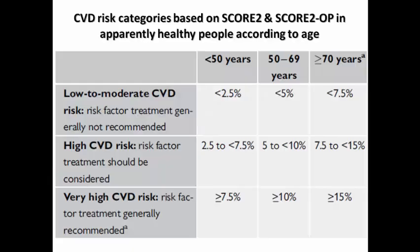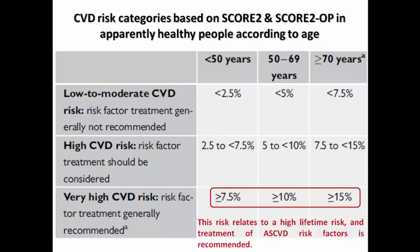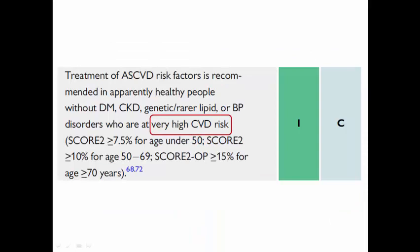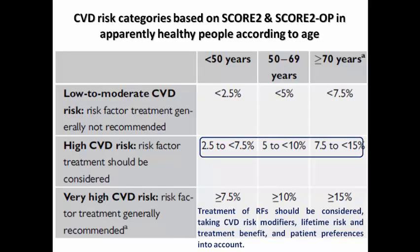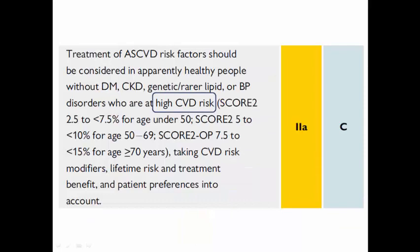If the patient has an estimated very high cardiovascular risk — defined as ≥7.5% for age under 50, ≥10% for age 50–69, and ≥15% for age 70 or older — this relates to high lifetime risk, and treatment of risk factors is recommended. There is a Class I recommendation that for a patient with very high cardiovascular risk, treatment of risk factors is recommended in apparently healthy people. If the estimated risk is high, treatment of risk factors should be considered — Class IIa — taking into account cardiovascular risk modifiers, lifetime risk, treatment benefit, and patient preference.